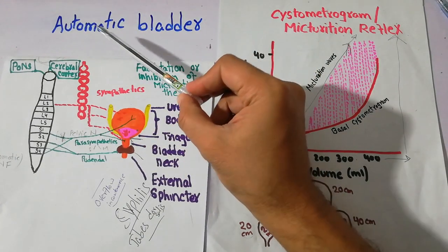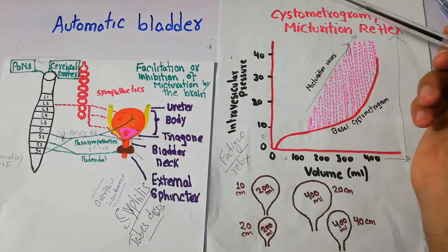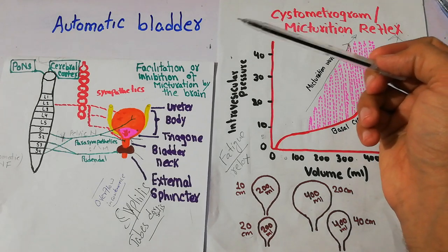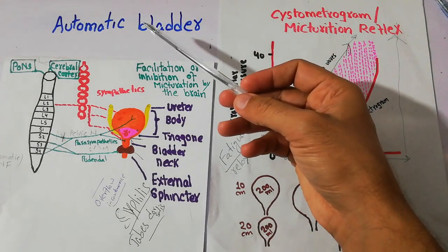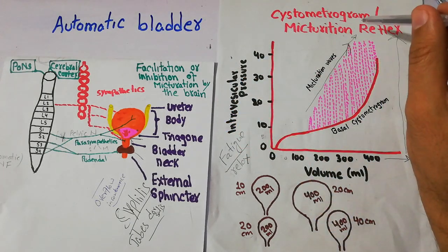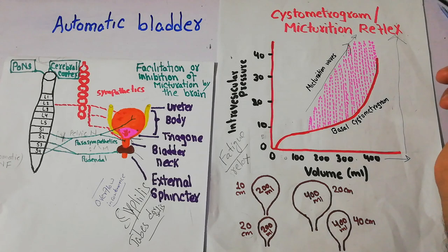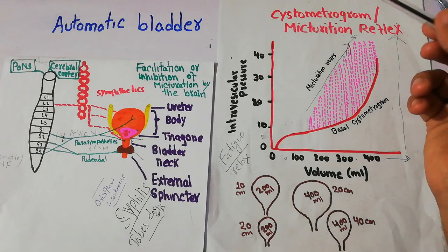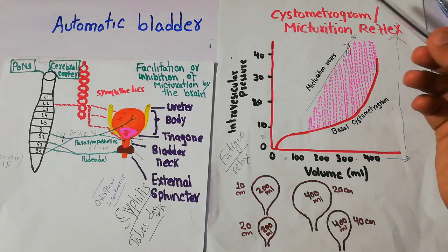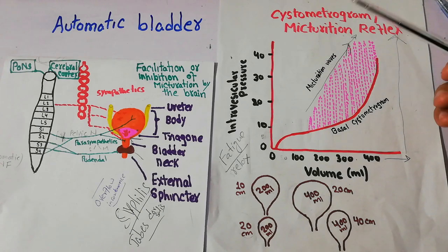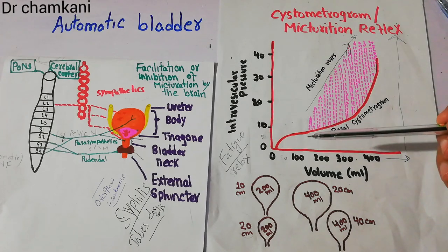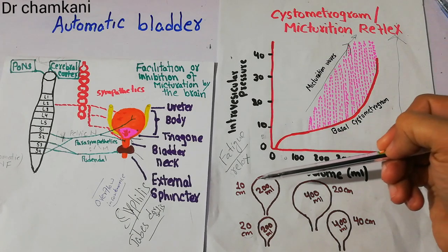To understand automatic bladder, we must summarize the micturition reflex. We have made a full video about the micturition reflex — if you want to understand it properly you can watch those videos — but I am going to quickly summarize it. Micturition reflex is basically a condition in which periodic contraction of the urinary bladder occurs.